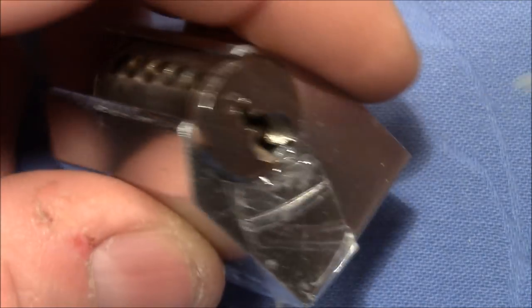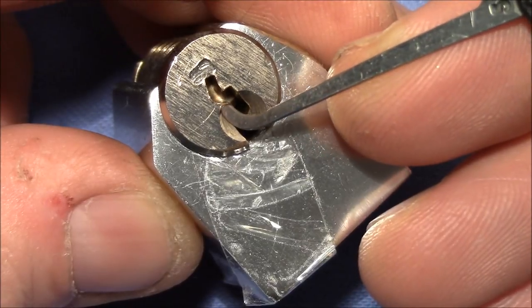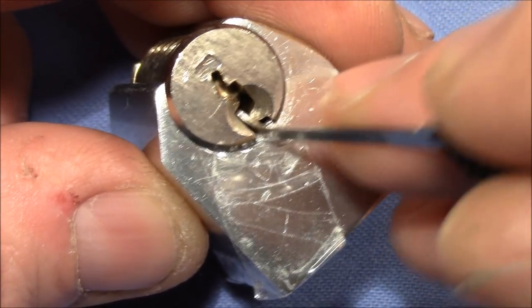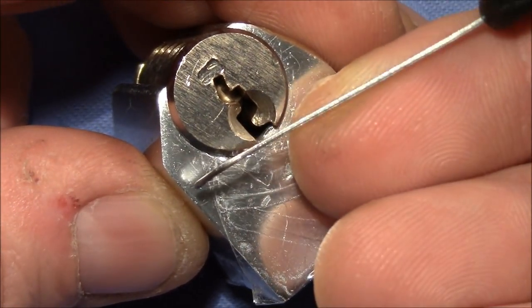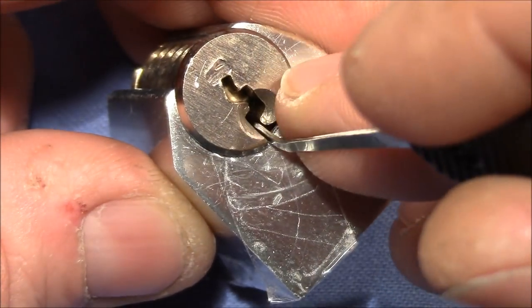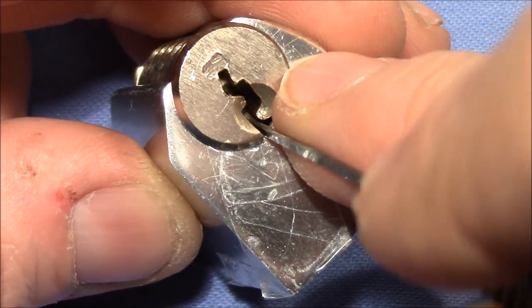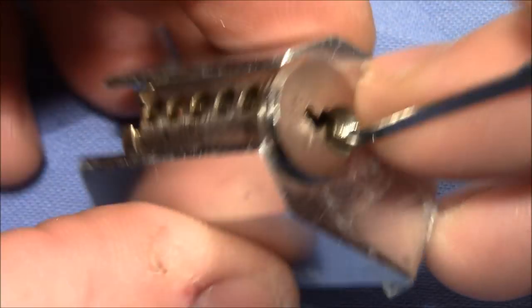Another possibility to pick this keyway is to use the holes in the warding. In this area here you can use a very thick pick. It needs to be a very deep hook, the deepest you can get in here. And then you can pick through holes of this piece of warding.